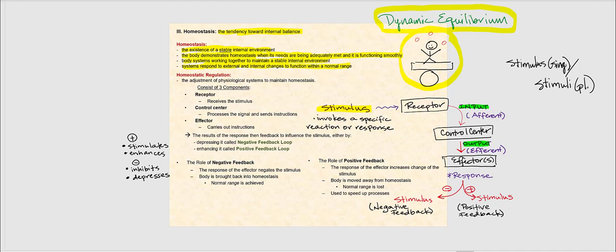With homeostatic regulation, this involves adjustment of physiological systems to maintain homeostasis. Most of the time we're not aware that this is happening, but it's happening all the time — otherwise we'll end up getting sick and worse yet, we die. Homeostatic regulation consists of three components: the receptor, the control center, and the effector. Before discussing these three components, let's define stimulus: stimulus is anything that invokes a specific reaction or response.